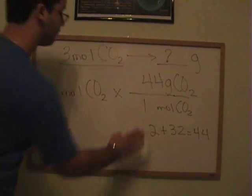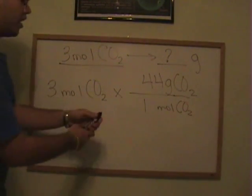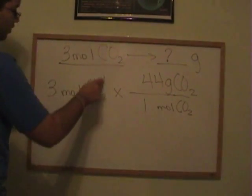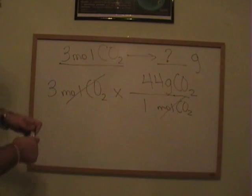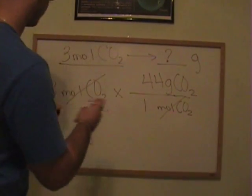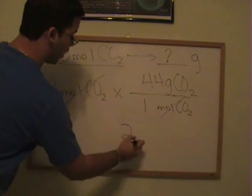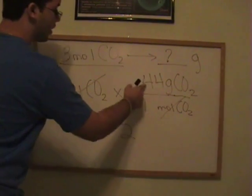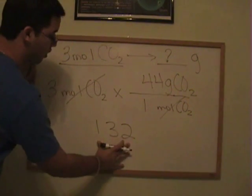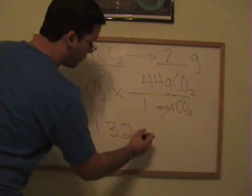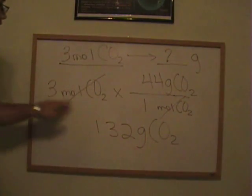Now if you notice, carbon dioxide, the moles of carbon dioxide are going to cancel out. This cancels out. And all you need to do now is 3 times 44. 3 times 4, 12, bring 1 up. 3 times 4 again is 12 plus 1, 13. So we have 132 grams of carbon dioxide in 3 moles.